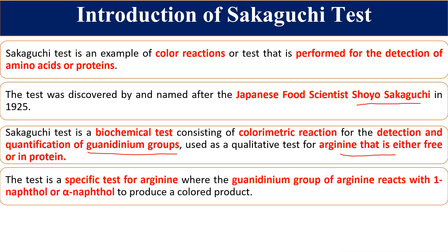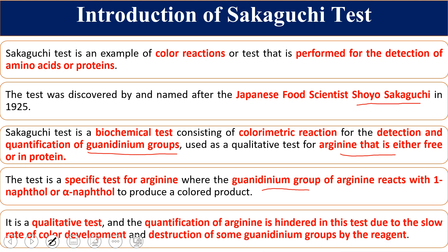This is a very specific test for arginine because out of the 20 amino acids used for protein synthesis, only arginine contains a guanidine group. So this is a specific test for the arginine amino acid. The principle is that the guanidine group of arginine reacts with alpha-naphthol (also called 1-naphthol) in alkaline conditions, giving a red color product. The presence of a red color product is a positive result for this Sakaguchi test.